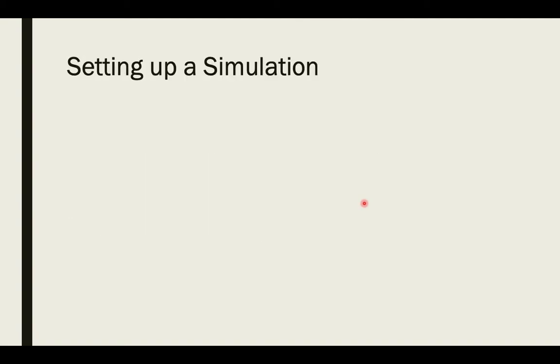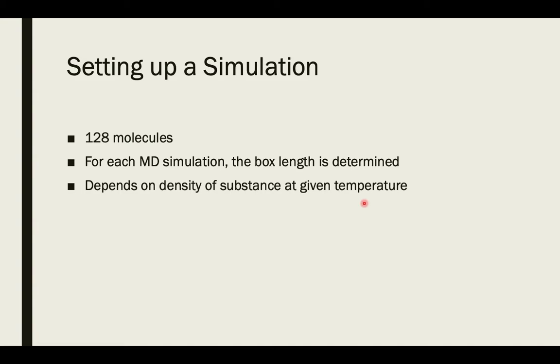To set up our simulations, we're going to begin with 128 molecules. For each MD simulation, the box length is determined because the simulation is just a box. The box length is dependent upon three different things: the number of molecules, the density at a given temperature of the substance, and the mass. For water, the box length is typically around 15 angstroms.